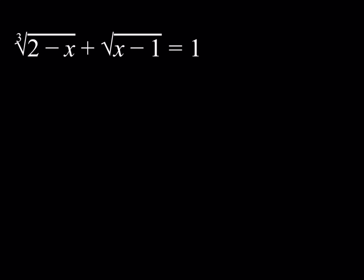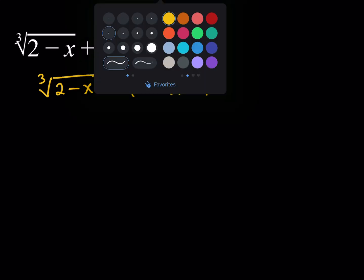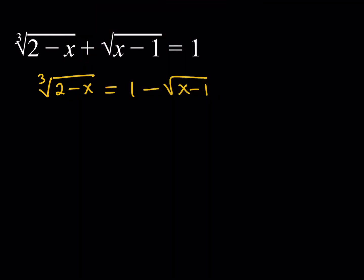Normally, if you're trying to solve a radical equation, you would basically just take one of the radicals and try to isolate it. So let's go ahead and try to isolate the cube root here, for example. I can subtract the square root of x minus 1 and then isolate it this way. Typically, you would try to cube both sides because you want to get rid of the radical, and this would be the usual method.